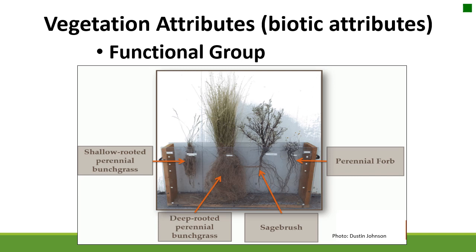Here's a picture of some functional groups we often use in range. We have deep-rooted perennial bunch grasses — this is a blue bunch plant, and you can see the roots. It's going to act differently than the shallow-rooted perennial bunch grass next to it, which is Poa secunda. They have different profiles in the soil where they can access different nutrients, so they behave differently when there are disturbances or management practices. Sagebrush is a taproot species that can access water and resources much deeper in the soil profile.